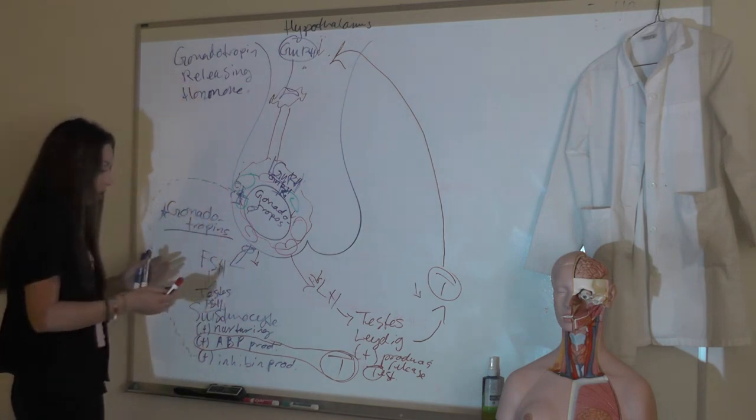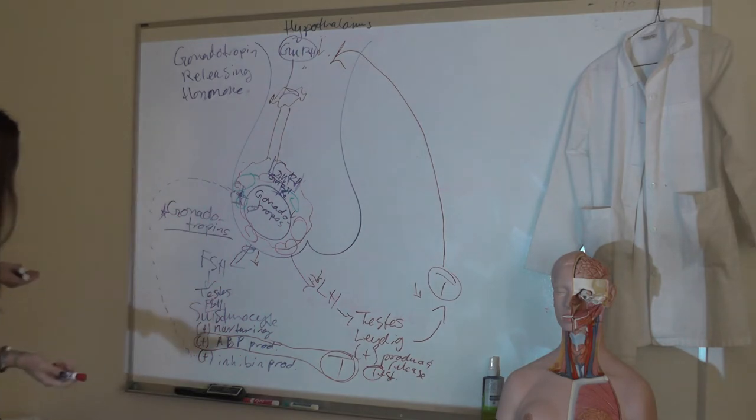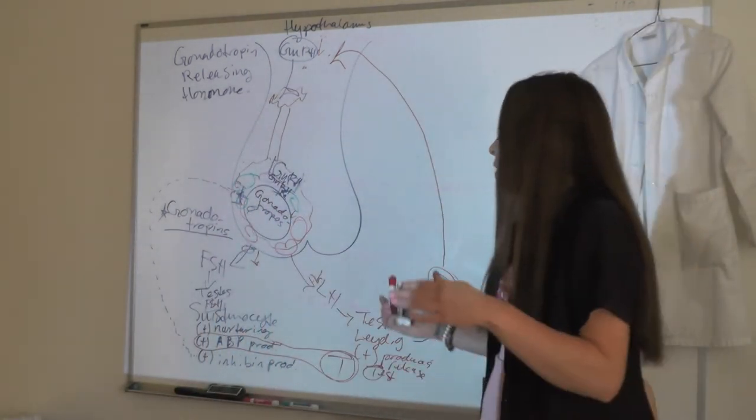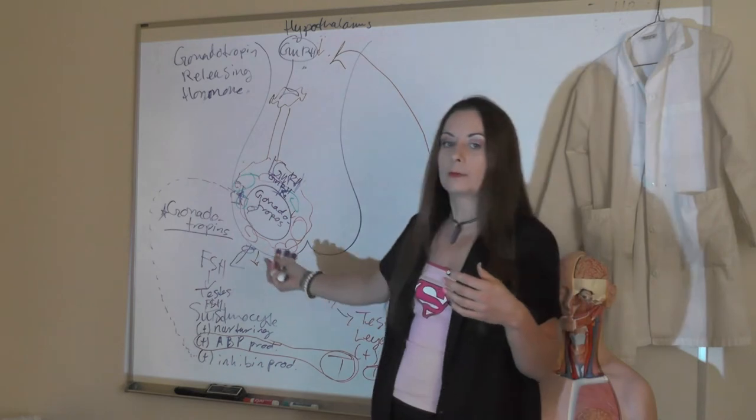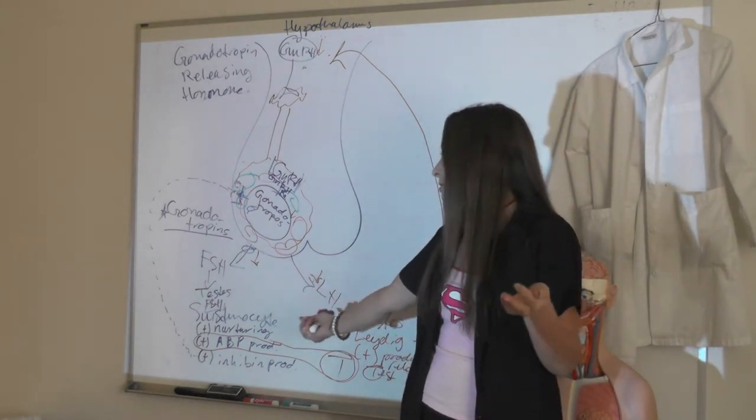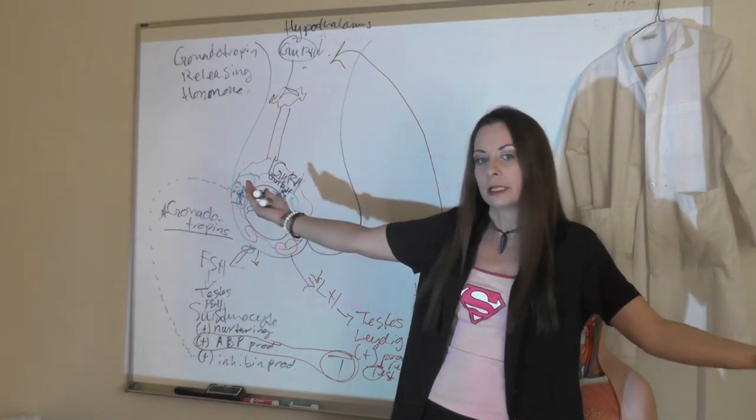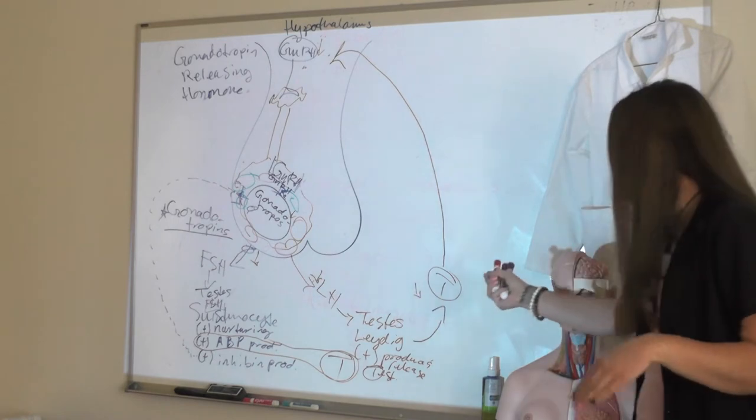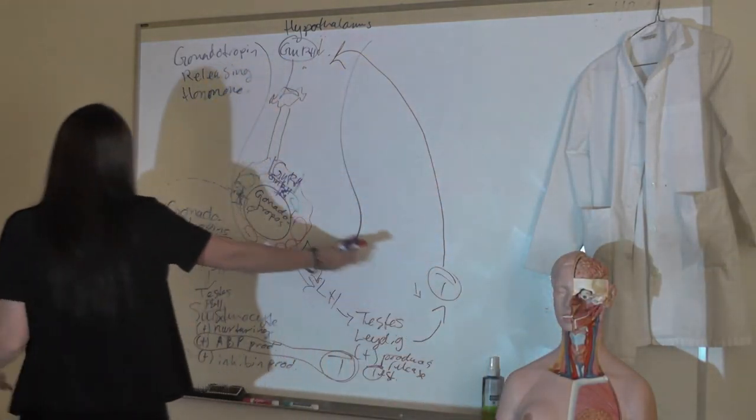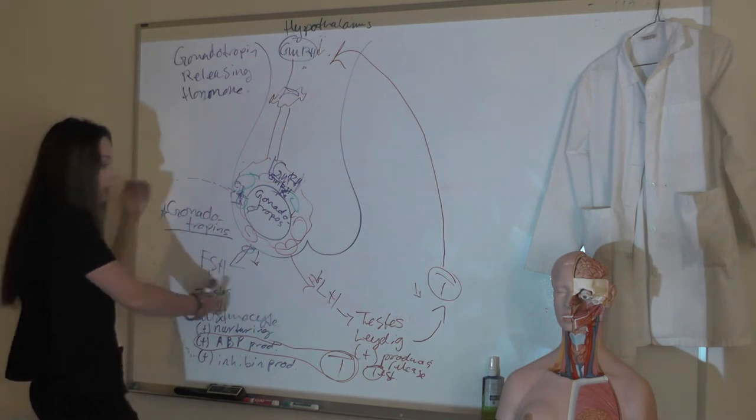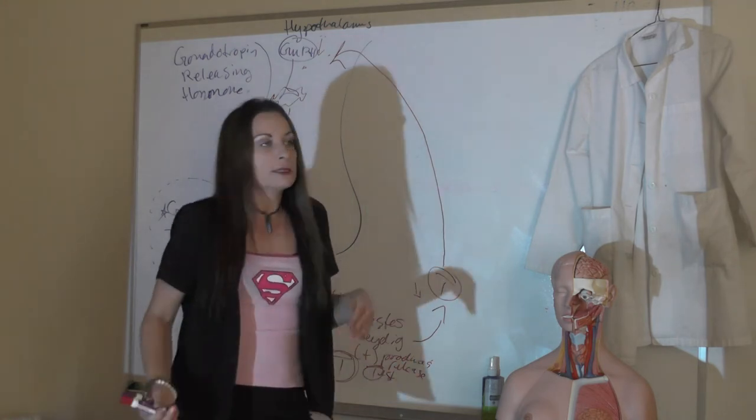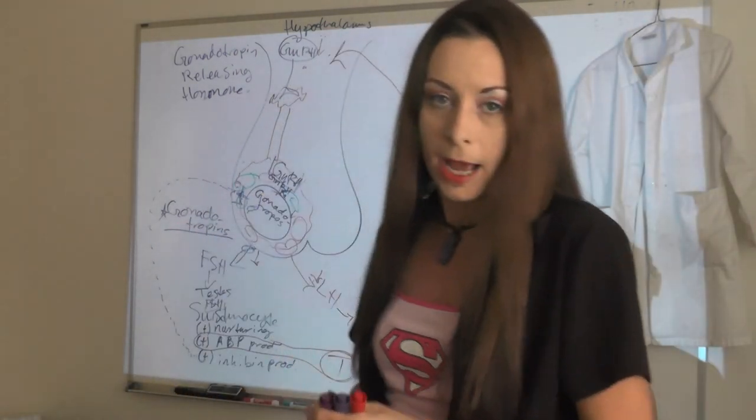What about this inhibin? Why does that matter? Why would we want to selectively inhibit FSH release? FSH is really going to be responsible for stimulating sperm production. If you're in a situation where you don't necessarily need to be producing sperm, you still need to be able to release testosterone. How can I make sure to keep sperm count in homeostatic levels while also keeping testosterone levels in homeostatic range?